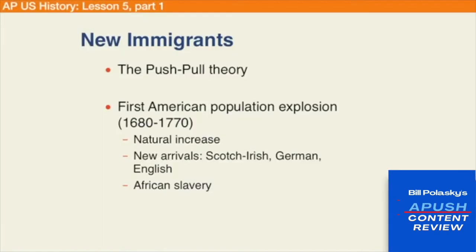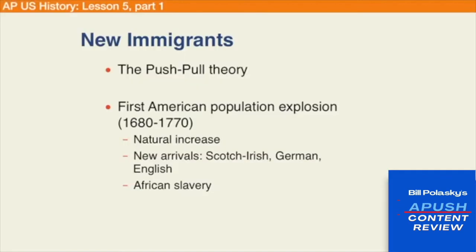You also see further new immigration from the Scotch-Irish, Germans, and English, still coming over because of the enticements of the indentured model, the labor needs, and the opportunity to acquire small amounts of land. African slavery at this point becomes systematically integrated as a large-scale model, through which you see a mass transshipment of hundreds of thousands to millions of individuals coming over.